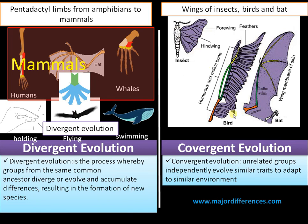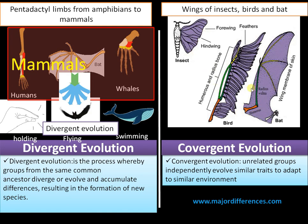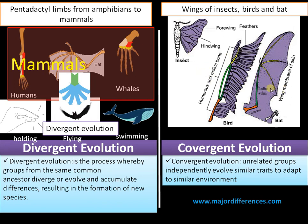These unrelated groups independently evolve a similar function — that is, flying. They have different structure and origin but independently evolved a similar trait, that is flying, to adapt to a similar condition, similar environment, or similar ecological niche. That is called convergent evolution.